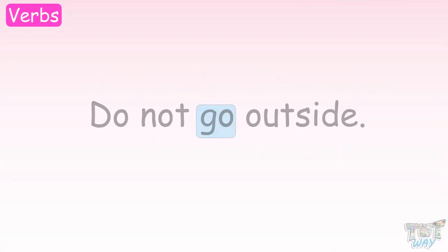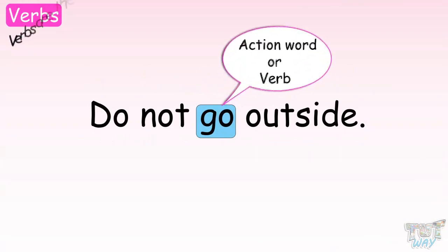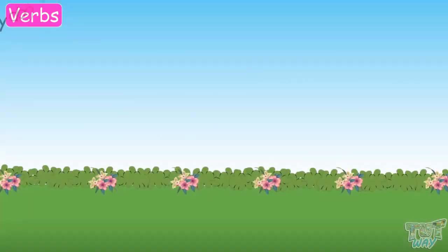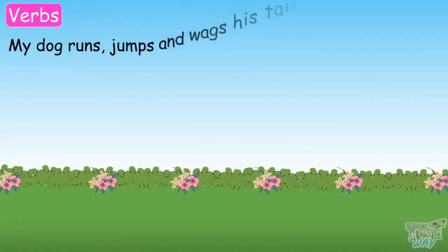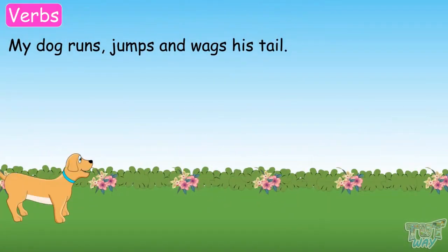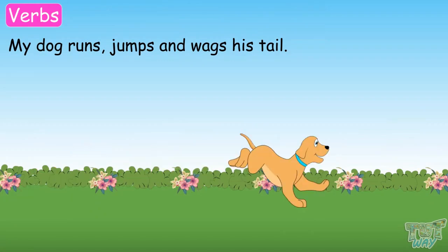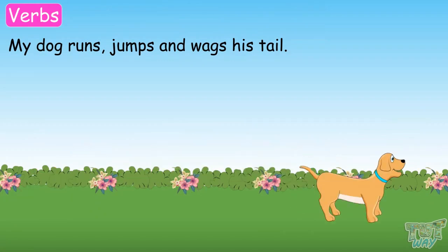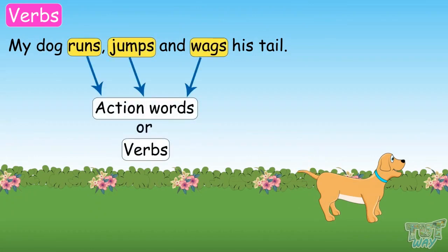We know verbs are action words. For example, my dog runs, jumps, and wags his tail. Here, runs, jumps, and wags are the action words or verbs.